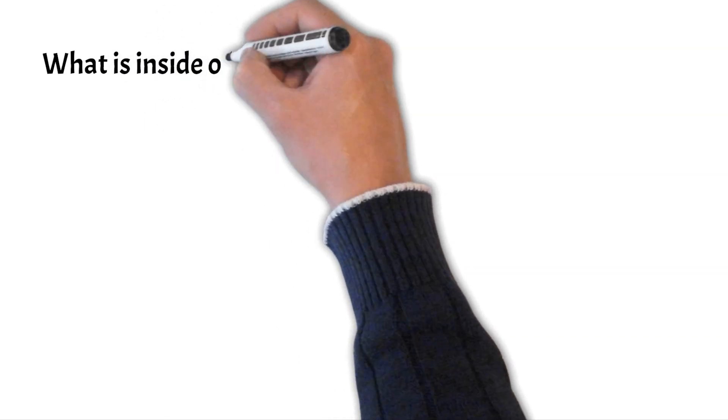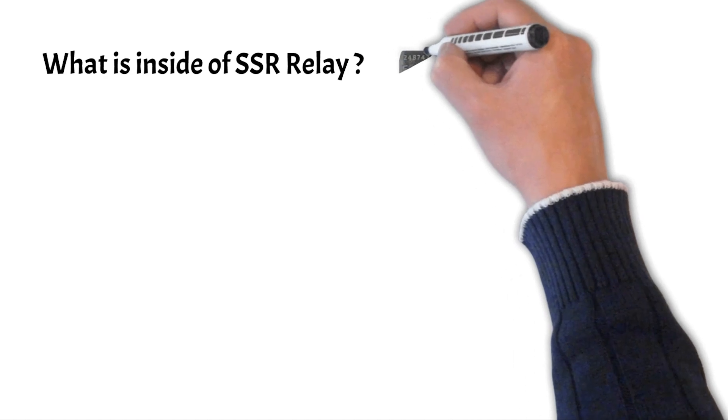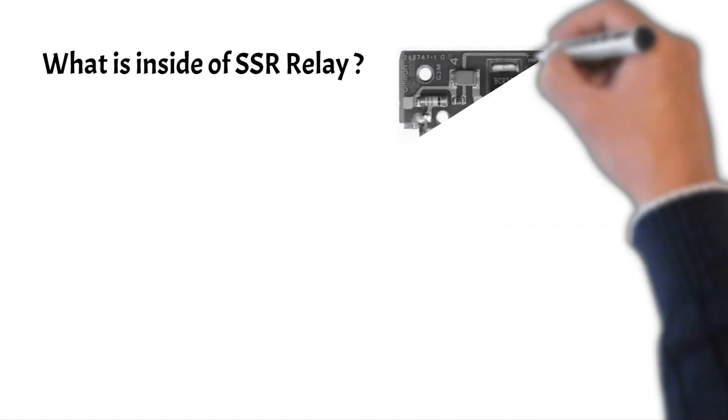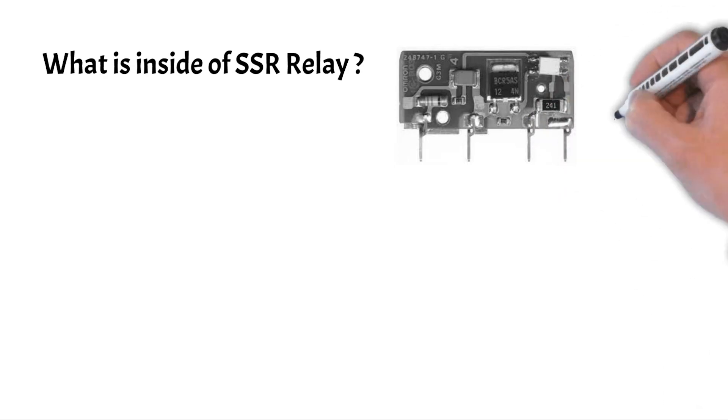What is inside of one SSR relay? The circuit of the SSR relay is like this, but how does it work?